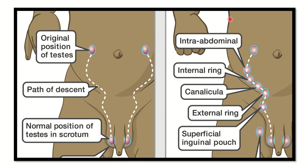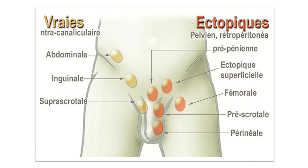Any site other than this normal pathway — if the testis is present anywhere outside it — is called ectopic testis. That means outside the normal pathway, whether in the abdomen, thigh, perineum, or at the base of the penis — that is called ectopic testis. We can see the ectopic testis in different areas on the diagram, and those positions are not part of the normal pathway.